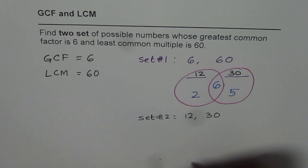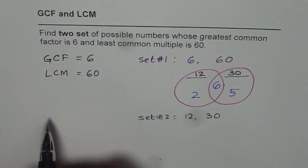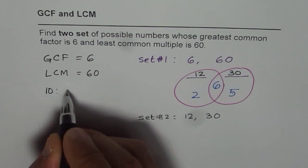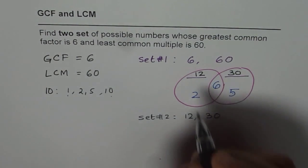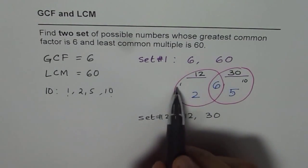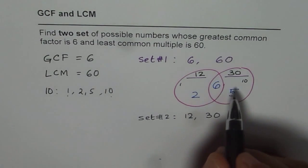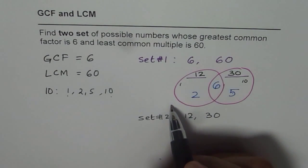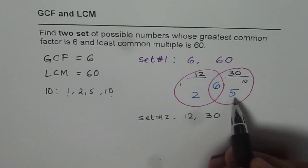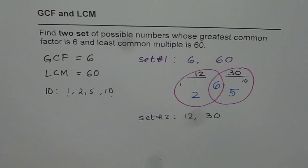Did you get it? Let's go through it once again. The first set we got because the least common multiple is 10 times the greatest common factor. So we are looking for factors of 10. Factors of 10 are 1 and 10, or 2 and 5. If I use 1 and 10 — writing 1 here and 10 here — I get 1 times 6 equals 6, and 10 times 6 equals 60. That is my first set. To get the second set, I consider the factors of 10 as 2 times 5. The first number has factors 2 and 6, giving 2 times 6 equals 12. And the second number has factors 6 and 5, giving 6 times 5 equals 30. So I get my second set. I hope now you understand and appreciate it.